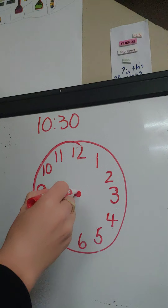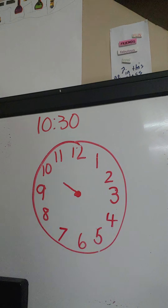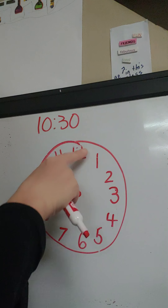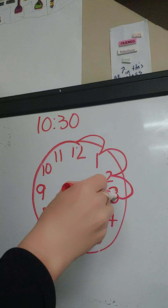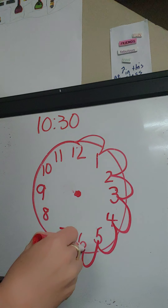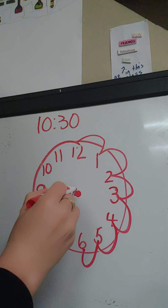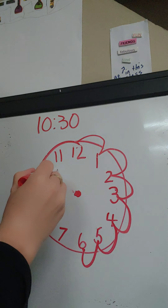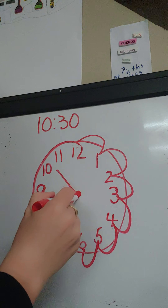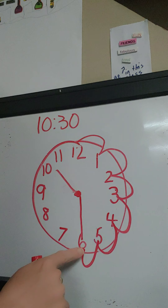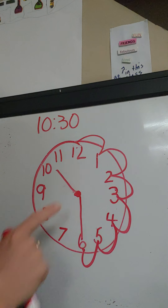Am I going to have it directly on the 10? Nope, because 30 is halfway around. 5, 10, 15, 20, 25, 30 — I'm halfway around the clock. So my hour hand is going to go halfway in between the 10 and 11. Where is my long minute hand going to go? Right down to the 6, because that's 30 minutes. That's half past 10 — it's halfway between 10 o'clock and 11 o'clock. So my hour hand goes in the middle.